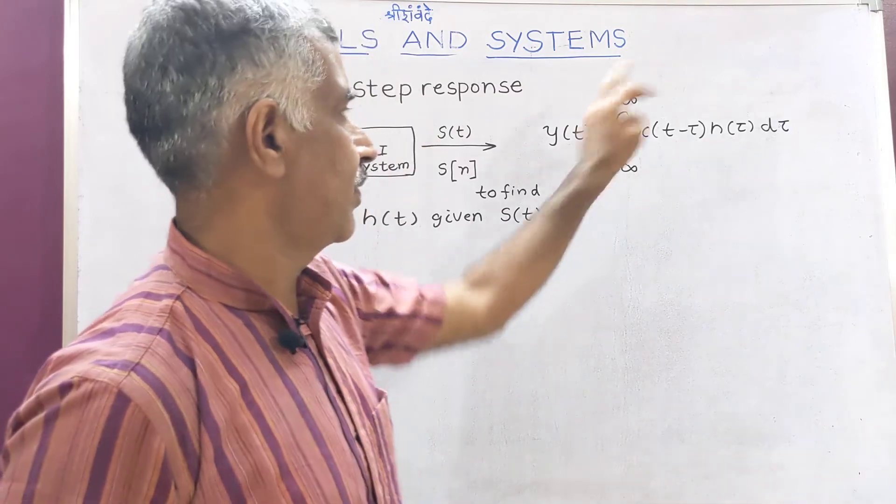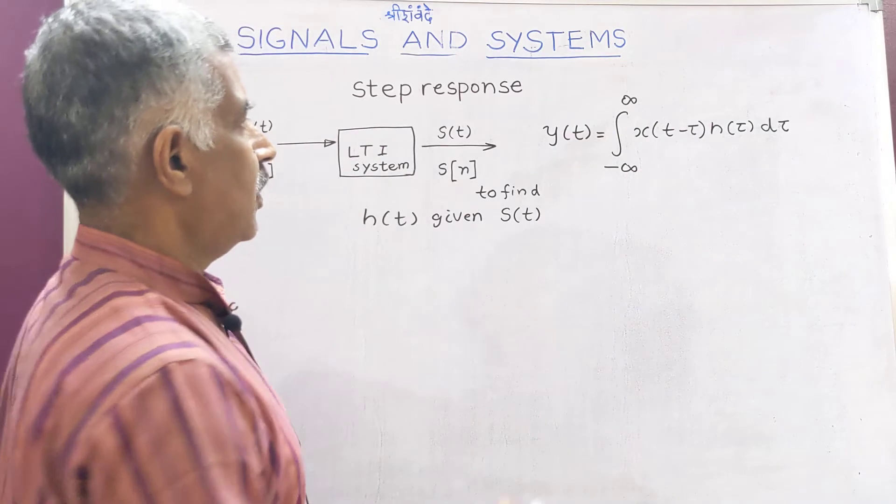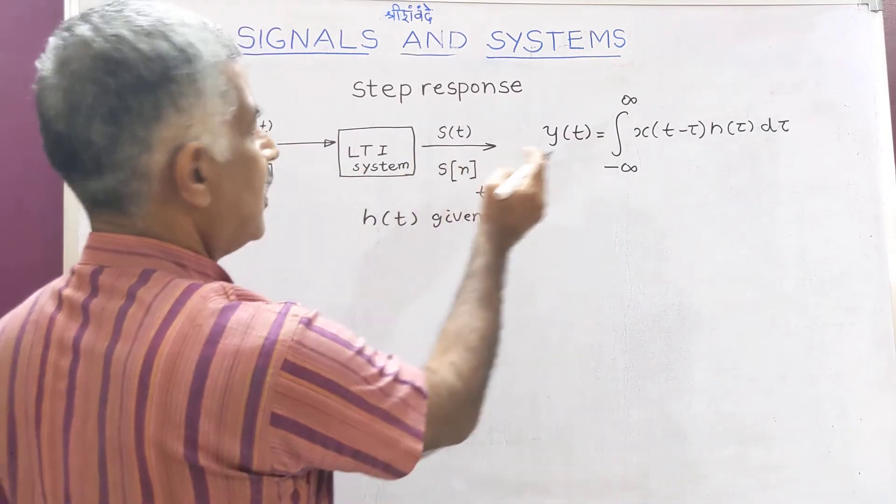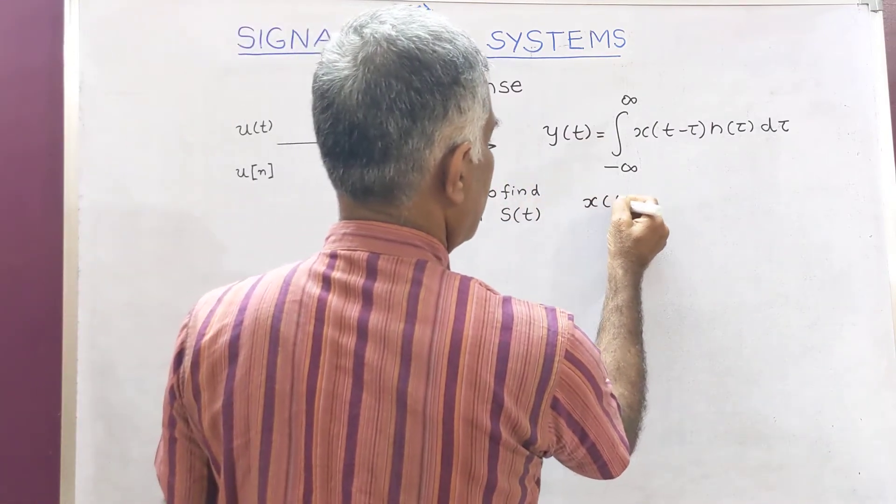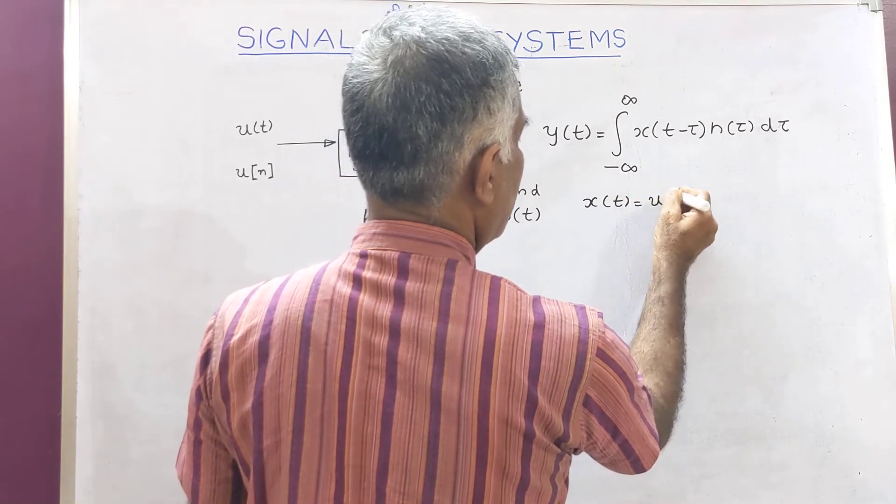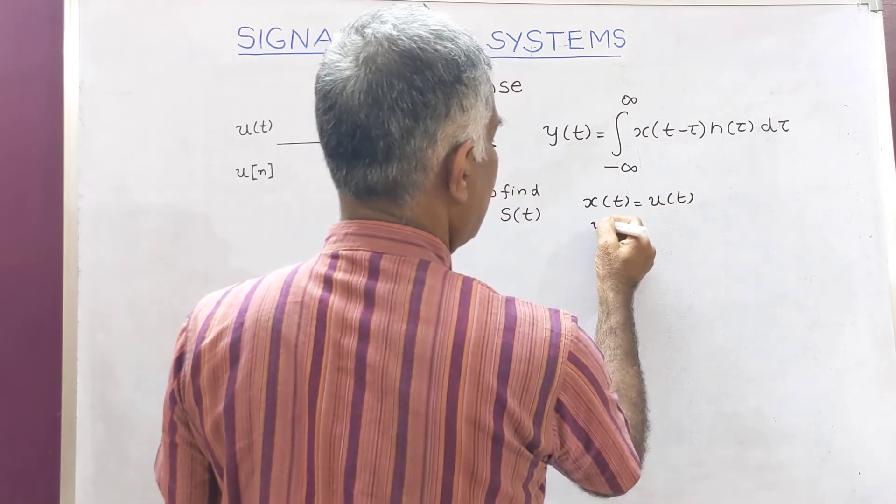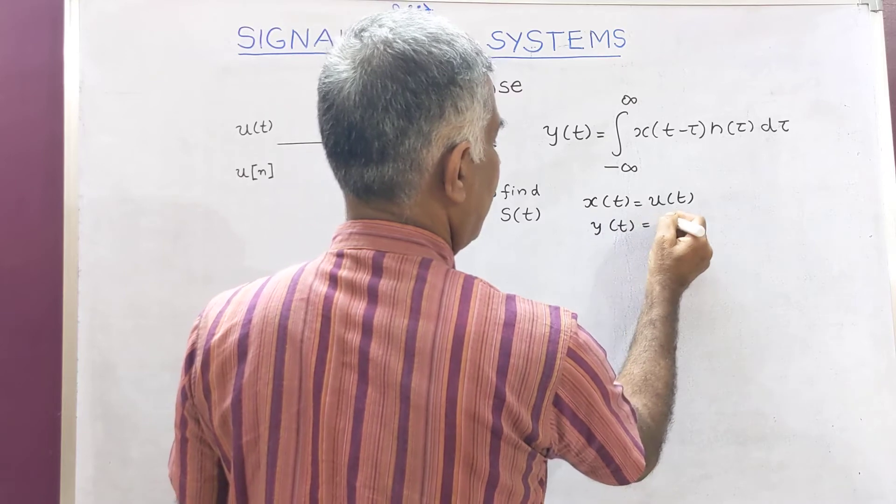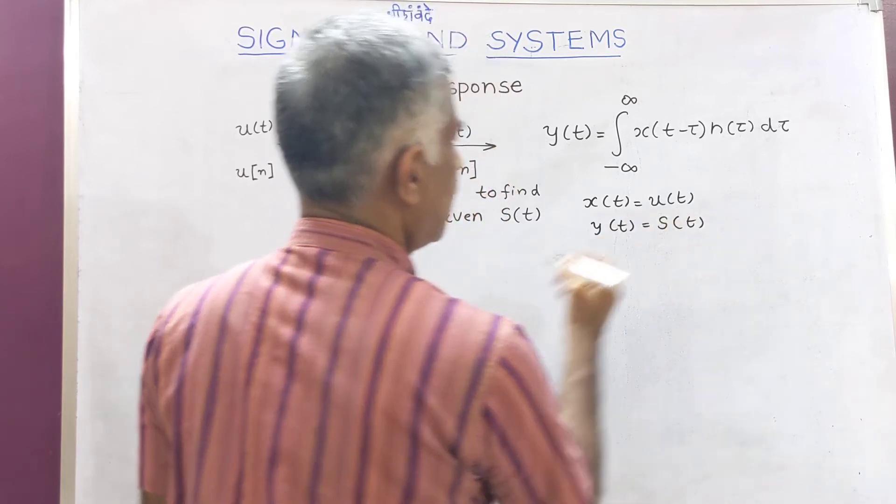Now in our case, X of T is U of T and Y of T will be S of T.